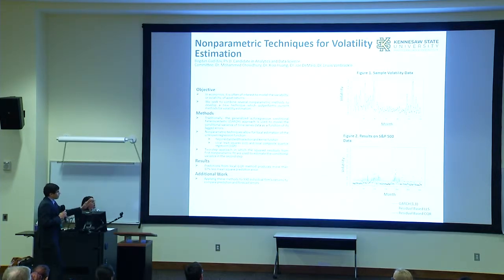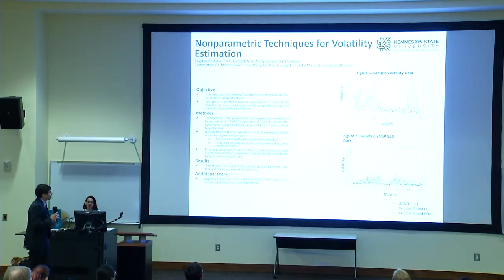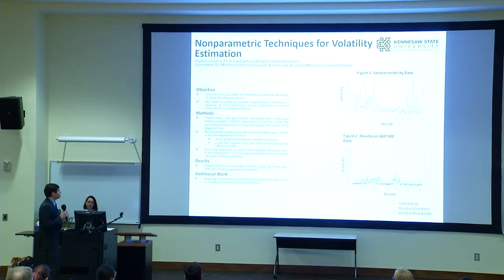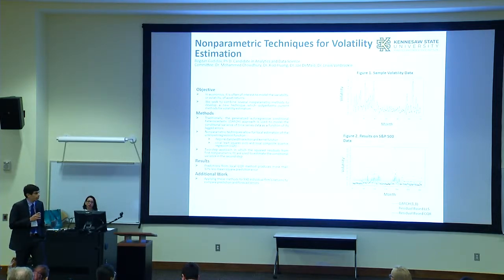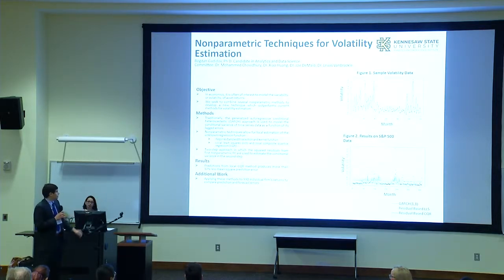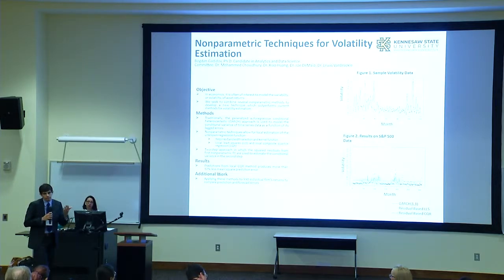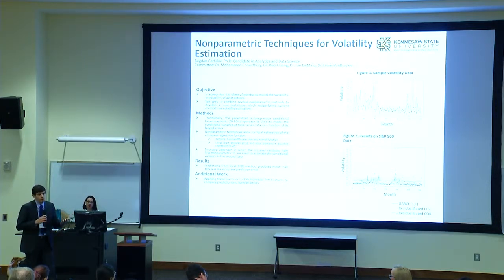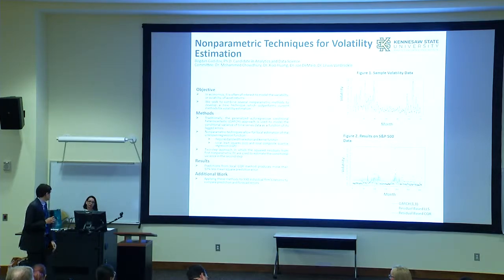Our results are shown in Figure 2. We find that the local composite quantile regression produces more than 10% less mean squared error and prediction error, as shown in Figure 2. We're currently applying this to other firms' data — we have a total of 990 different firms we're looking at.